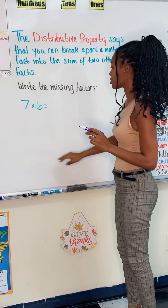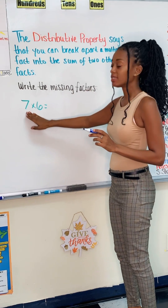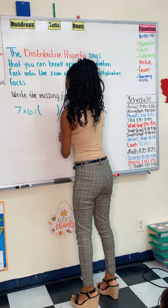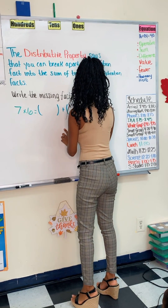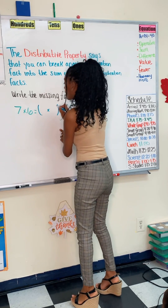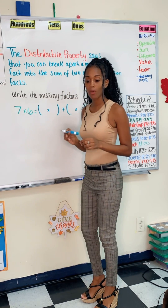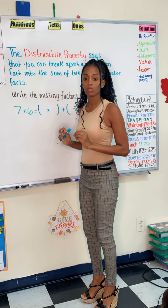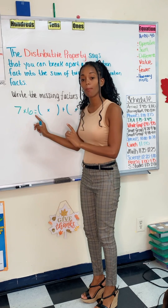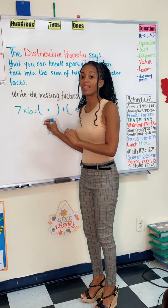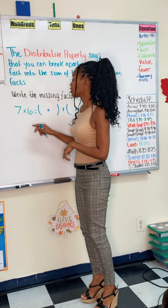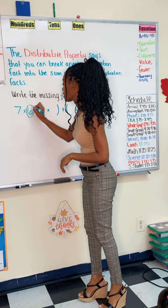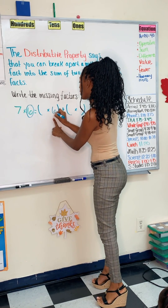Write the missing factors. So we have the number seven times six. First thing I'm going to do is put my parentheses and then put my multiplication sign in the middle. The second thing I'm going to do is decide which number I am going to double. So first I'm going to double one of my numbers and then break apart the other number. I'm going to decide to make six my double number, so I'm going to put that right here.